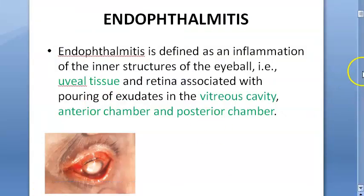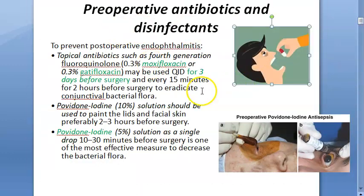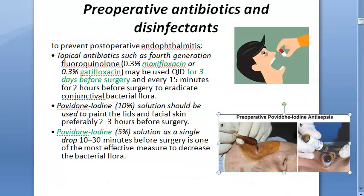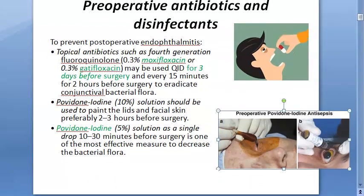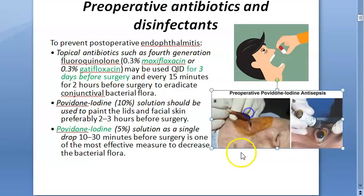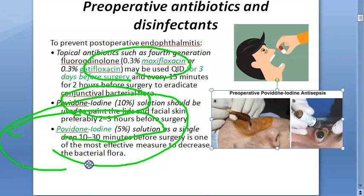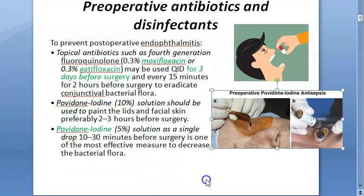Before any eye surgery, prophylactic antibiotics are given: moxifloxacin or gatifloxacin four times a day for three days before surgery, and then every 15 minutes for two hours before surgery, to remove conjunctival bacterial flora. The eye and facial skin are painted two to three hours before surgery. Five percent povidone iodine drops are applied 10 to 30 minutes before surgery, and 10 percent povidone iodine is used for painting. All this decreases bacterial flora and prevents endophthalmitis.